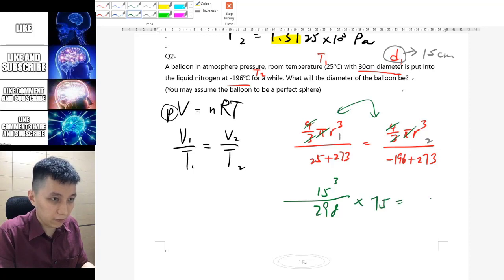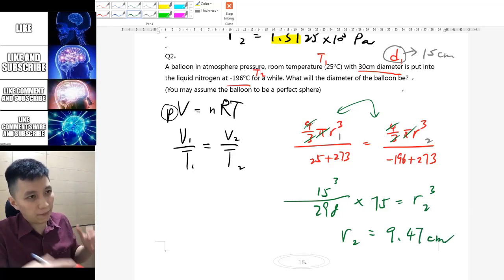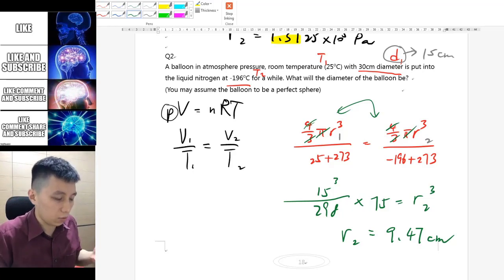Which is going to be 77. This will give you r2 cubed, so eventually you should find the answer to be 9.47 cm, so it should be smaller and that makes sense when you get cold.